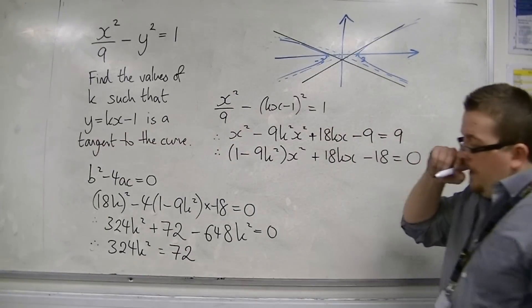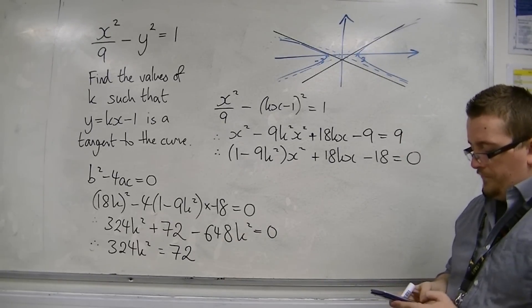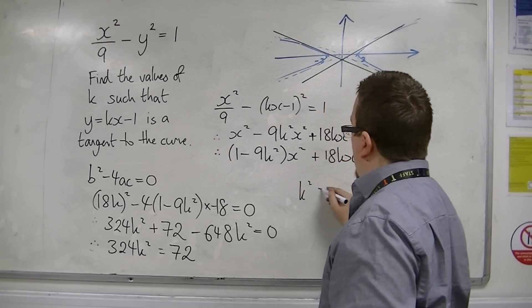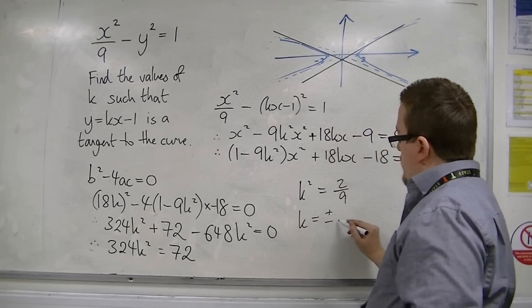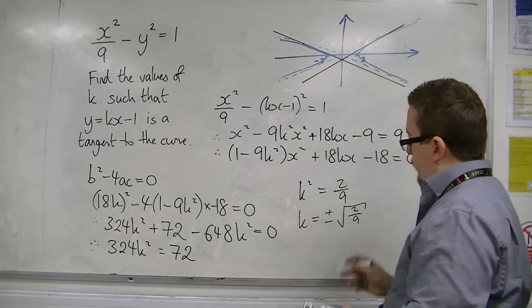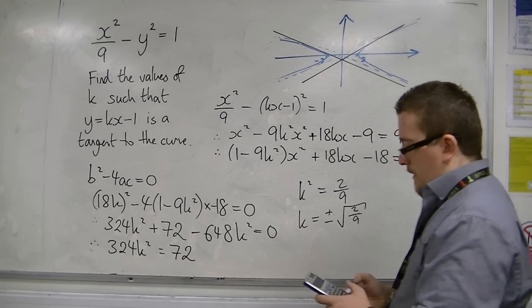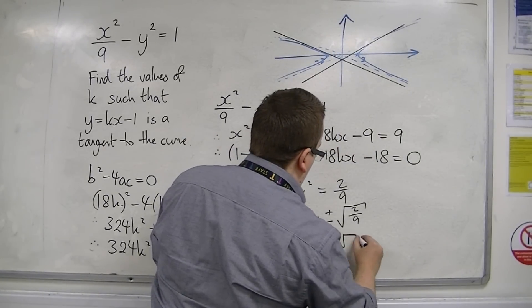Now, if you divide both sides by 324, you get 2 ninths. So k squared is equal to 2 ninths. So k is equal to plus or minus the square root of 2 ninths. Square root of 2 ninths is root 2 over 3, so plus or minus root 2 over 3.